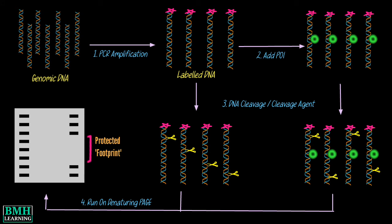The labeled DNA fragments and DNA binding protein, along with the cleavage agent, are mixed in one test tube. In another test tube, labeled DNA fragments are mixed with the cleavage agent without the DNA binding protein — this is used as a standard to compare the results. The cleavage agent cuts the DNA fragments present in both test tubes.